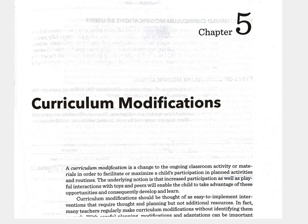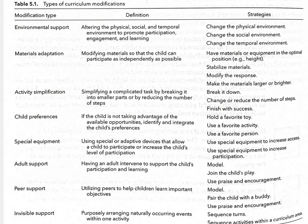Now we're going to look at the chapter reading on Blackboard. This chapter provides eight different types of basic curriculum modification: environmental support, material adaptation, activity simplification, child preferences, special equipment, adult support, peer support, and visual support. Those are eight different types of modification — they are just ideas, and we're going to take a closer look at them.